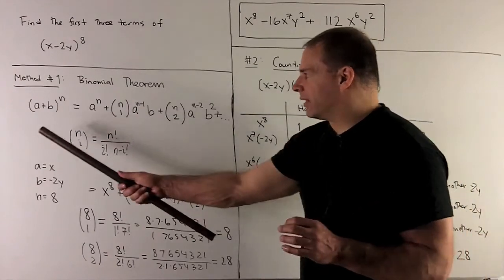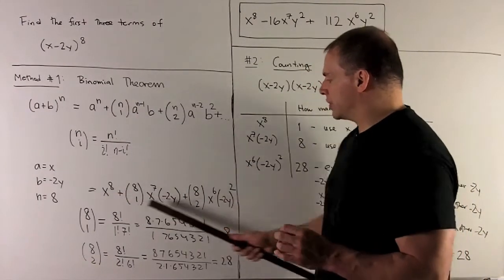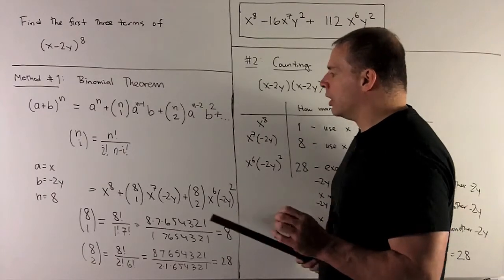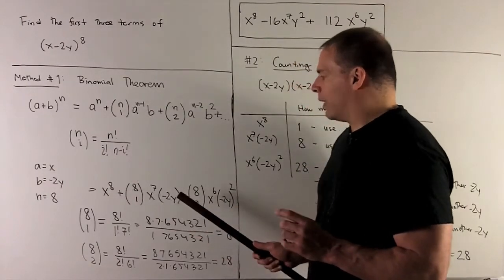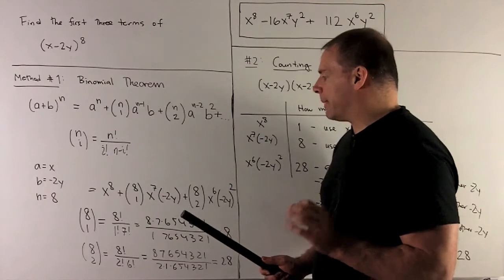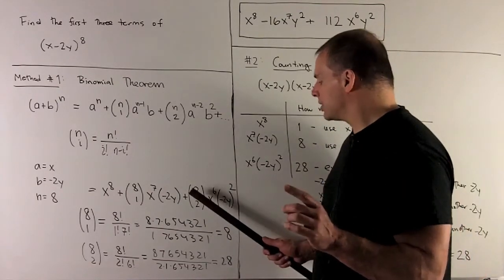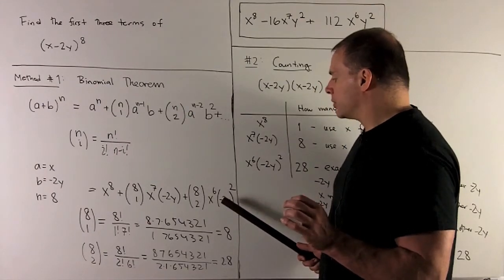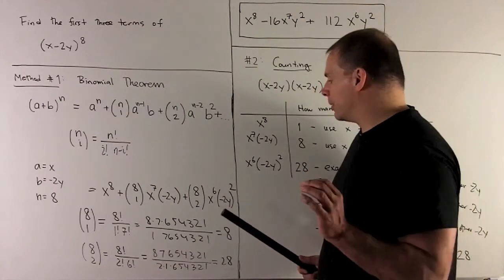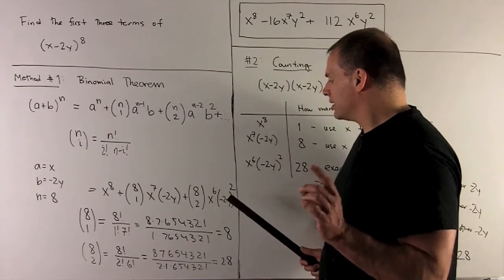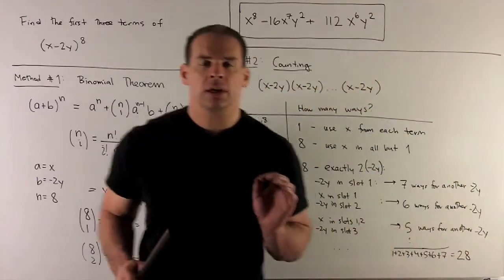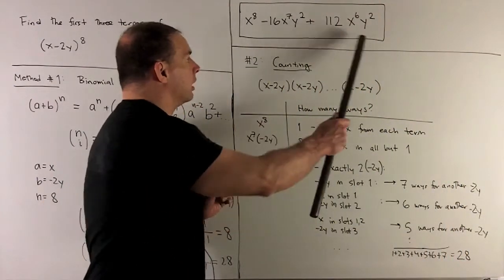So, combining everything into this expression here, what do we have? We're going to have x^8. We'll have a -2 times 8 gives me a -16x^7y + 28 times 4. It's going to give me 112. And then that's going to be by x^6 times y^2. So, our answer is going to be right here.